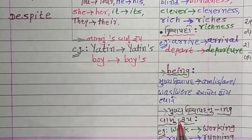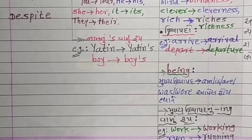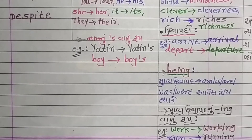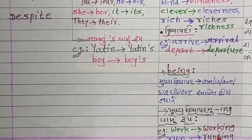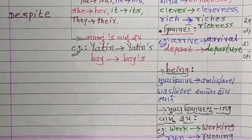The third method is the ING form of the main verb. When the sentence does not have am/is/are/was/were as the main verb, but has another main verb, then use the ING form of that main verb after 'in spite of' or 'despite.'